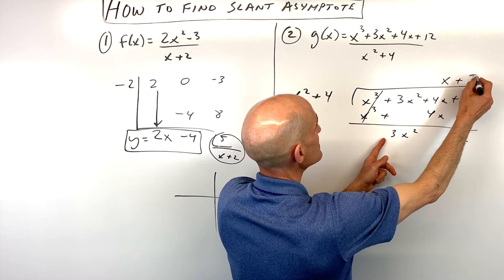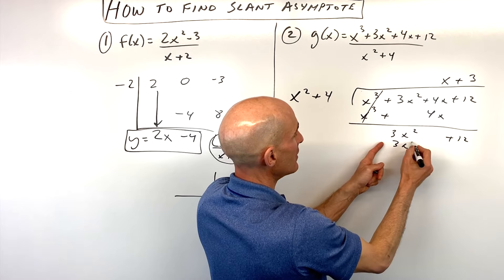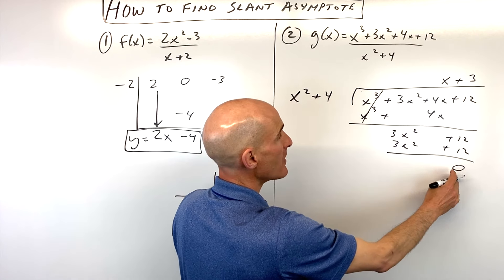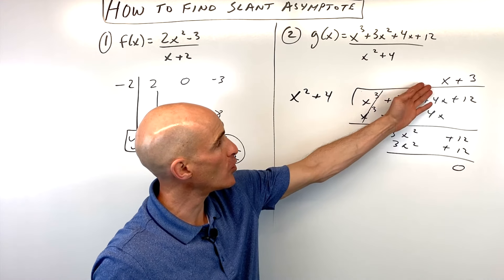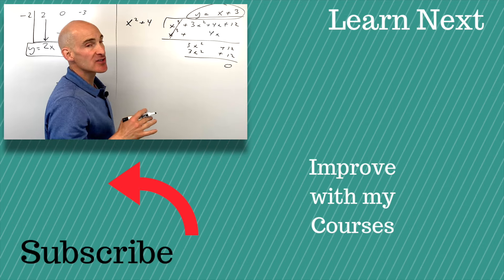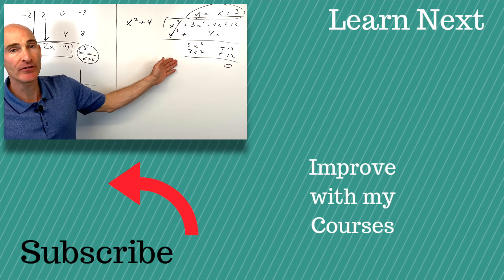That's three times. So if I distribute, I get 3x squared plus 12. I subtract. You can see there's zero remainder, but you don't have to worry about the remainder, just the quotient here. So y equals x plus 3 is going to be our slant asymptote for this rational function.